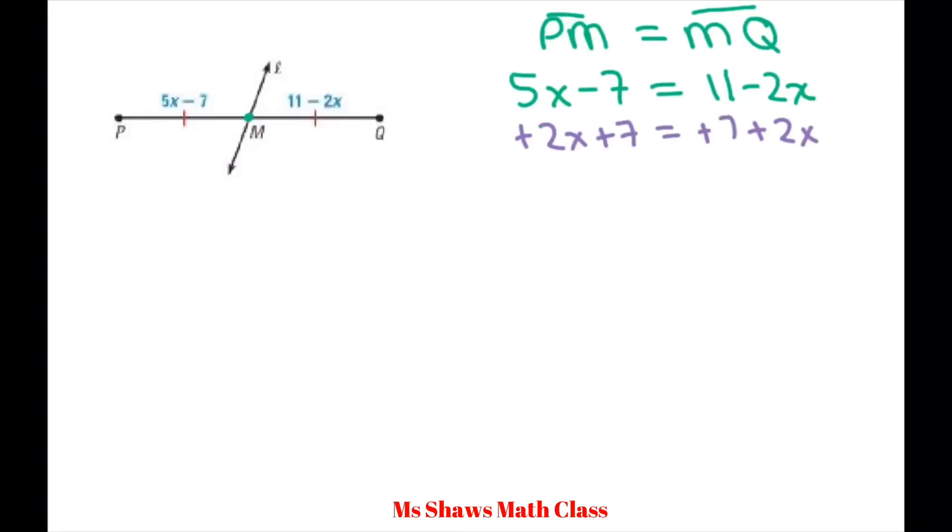Now this one's not as nice because we're going to get a fraction. So we get 7X plus 0 equals 18 plus 0, or 7X equals 18. Using your division property of equality, you get X equals 18 divided by 7. So that would be your answer.